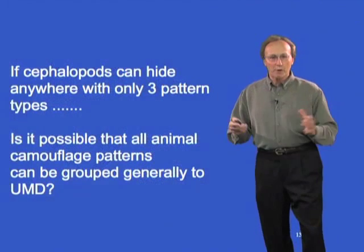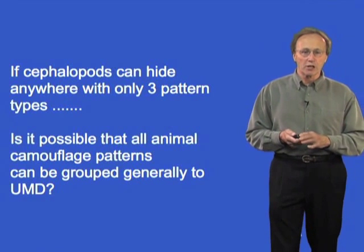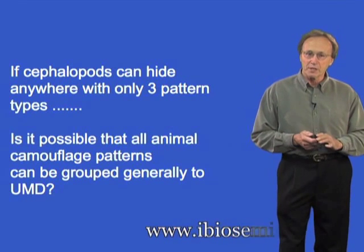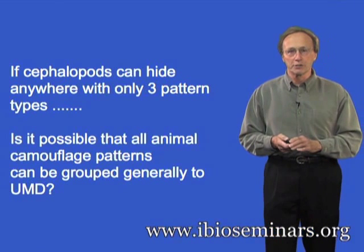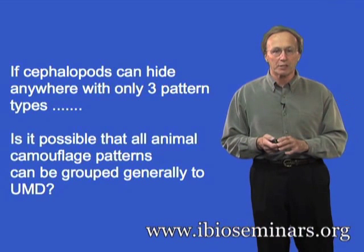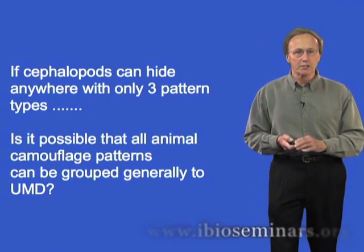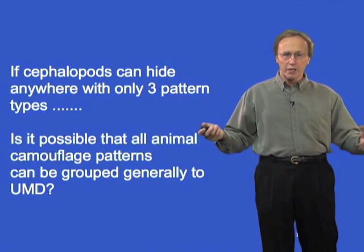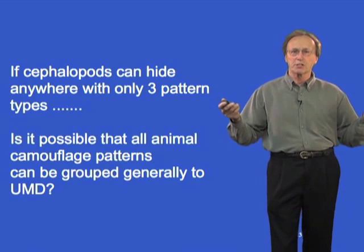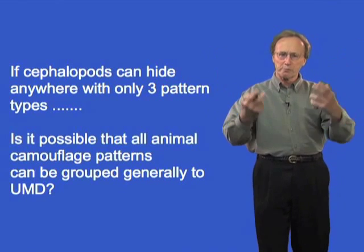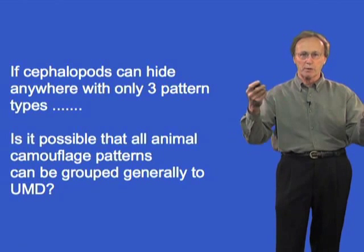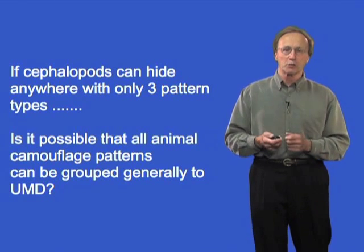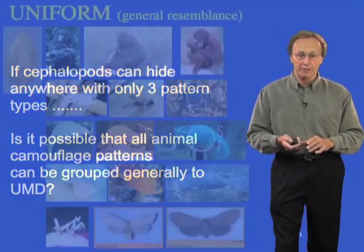The idea behind this is that if cephalopods can go anywhere and hide with only three pattern types — and that's a big if — is it possible that all animals have just three or four basic pattern types? How we arrived at this was to take thousands of pictures of our changeable octopus or cuttlefish and ask: is there some sense to this? We were able to sort them into three or four categories. The animals are teaching us the answer; we're not dreaming it up sitting at our desk in the lab.